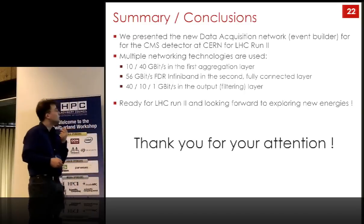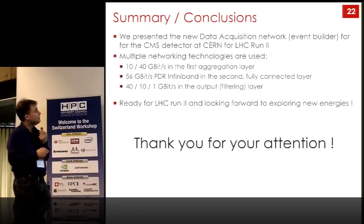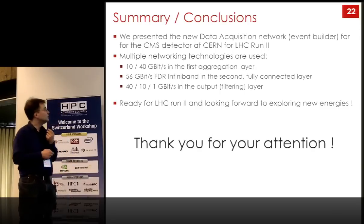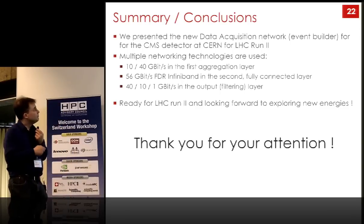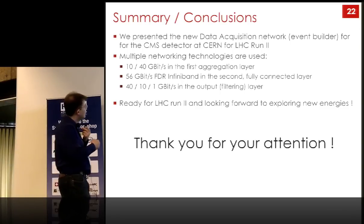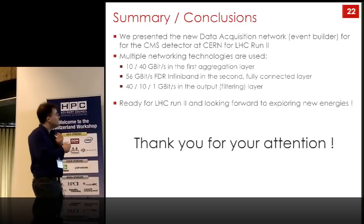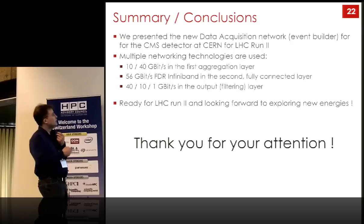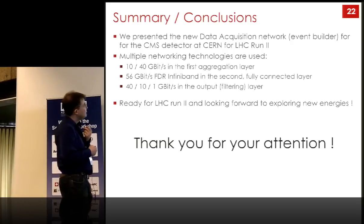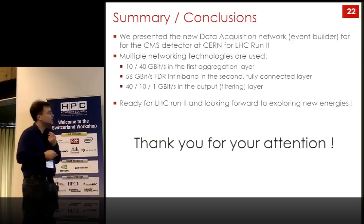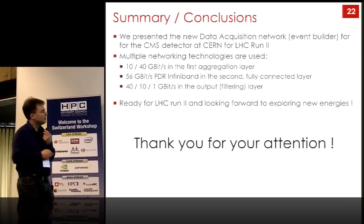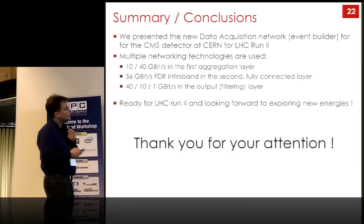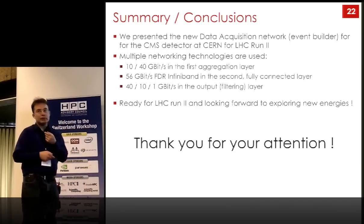Conclusions: we presented the new data acquisition system and event builder for the CMS detector at CERN for Run 2. We use multiple network technologies — from custom links over 10 to 40 gigabit Ethernet to 56 gigabit FDR InfiniBand, essentially everything. We are ready for data taking for Run 2, although this was delayed by about a month due to a problem in the machine. We look forward to exploring new energies. Thank you.